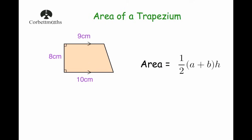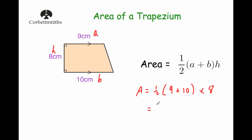Next example. This trapezium has two right angles. The parallel sides a and b are nine and ten. The height is the distance between them — because of the two right angles, the length of that side is also the height of the trapezium, which is eight. So the area equals one half of nine plus ten, times by eight. Nine plus ten is nineteen, times eight, then halved. Halving nineteen gives 9.5, times eight gives 76 centimetres squared. That's the area of that trapezium.